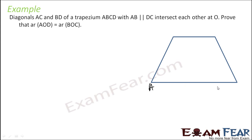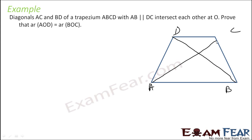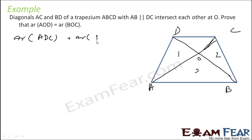Diagonals AC and BD of trapezium ABCD, where AB is parallel to CD, are intersecting each other at O. If you do that, area of triangle AOD and triangle BOC is the same. So area of 1 is equal to area of 2. Same logic as what we did: area of 1 plus 3 is the area of triangle ADC, and area of 2 plus 3 is area of triangle ABC. Both triangle areas are the same because they are on the same base and in the same parallel.